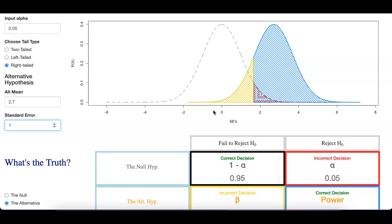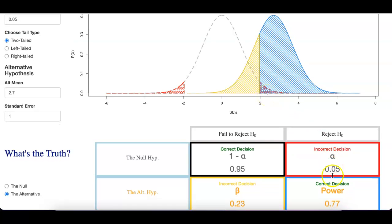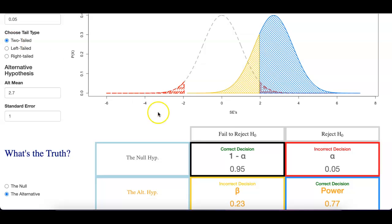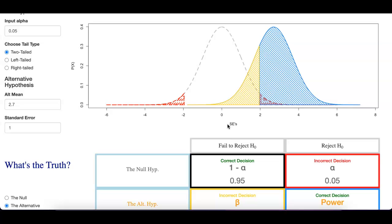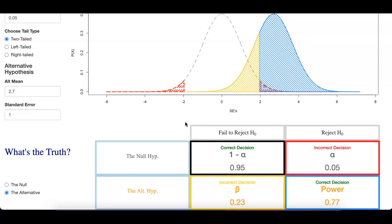Lastly, another thing that can affect power is whether it's a one-tailed or a two-tailed test. For the right-tailed test, power is at 85.4%. Switching to a two-tailed test, the rejection regions get spread to both ends, which decreases the red region on the right — and therefore decreases the power to 77%. That does it for this lecture on power, hypothesis testing, type 1 and type 2 errors. I hope this gave you an intuition, both visually and logically, for what these things mean. Good luck.